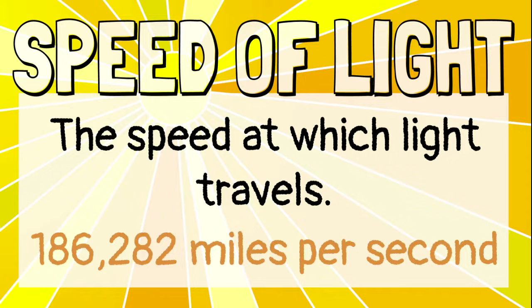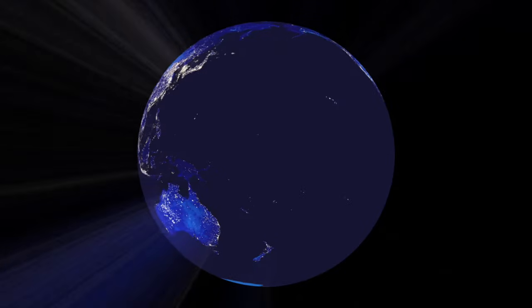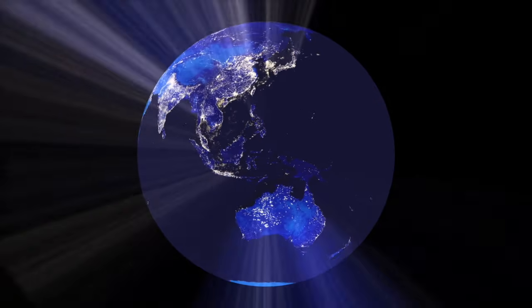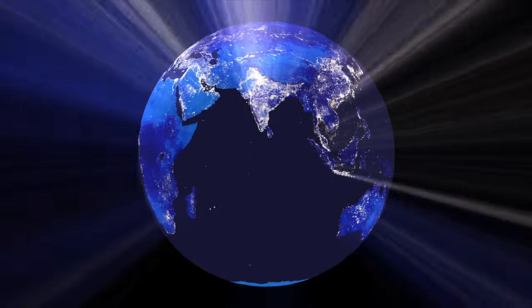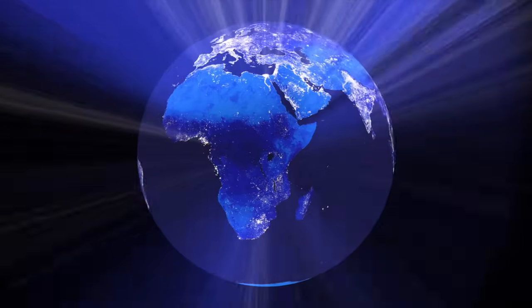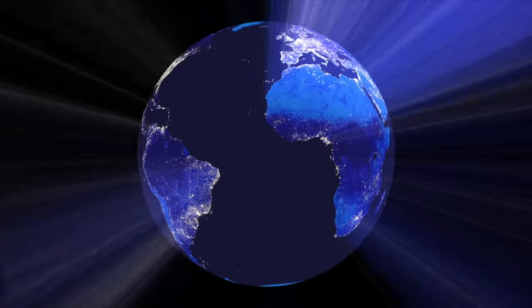Light always travels at 186,282 miles per second. That is incredibly fast. If you could travel at the speed of light, you could go around the Earth seven times in one second.